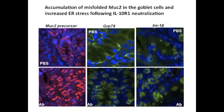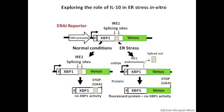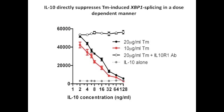You can also see that there's an increase in ER resident proteins GRP78 and IRE1β within the ER. Next, we utilized an in vitro model of intestinal goblet cells, the LS174T cells, to determine whether IL-10 can directly suppress ER stress. We did this by transfecting the LS174T cells with the IRE1 reporter construct, which allows monitoring of ER stress via IRE1 endonuclease-induced XBP1 splicing. IL-10 alone did not affect the splicing of XBP1; however, IL-10 directly suppressed tunicamycin-induced XBP1 splicing in a dose-dependent manner.